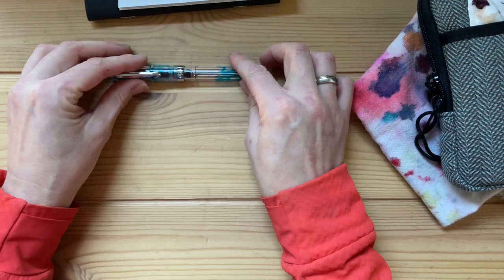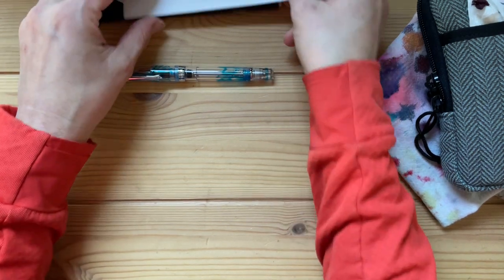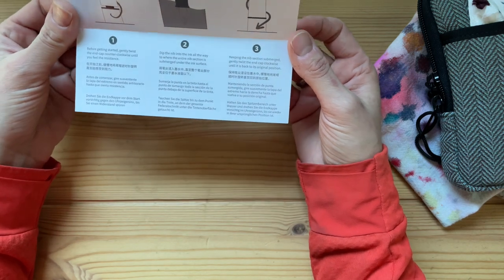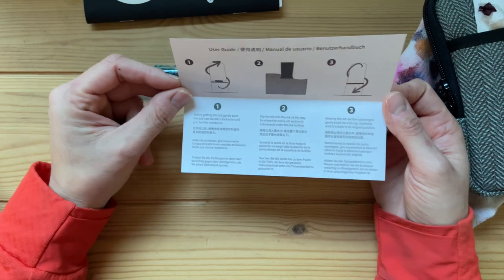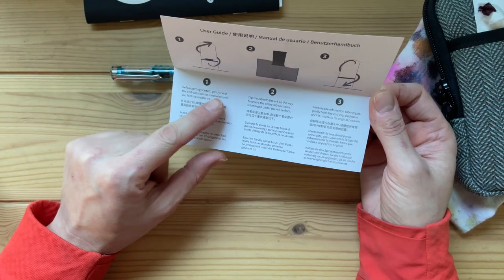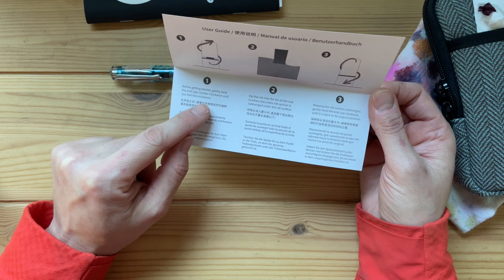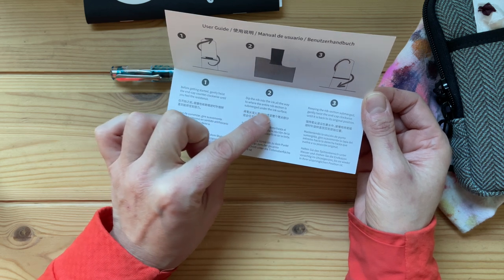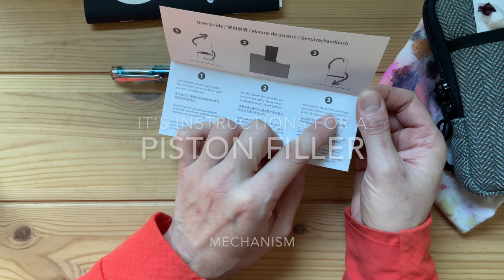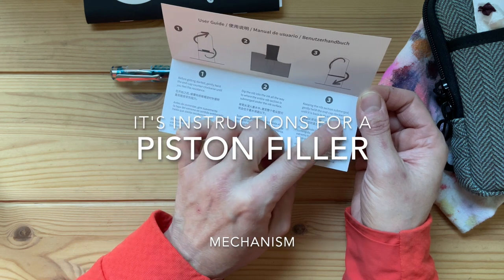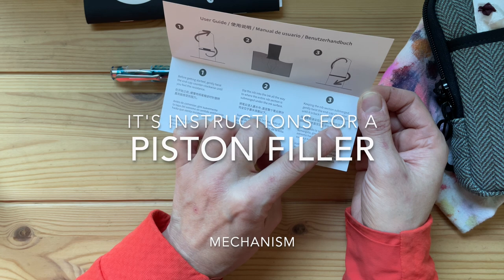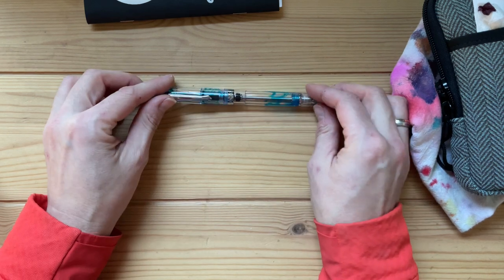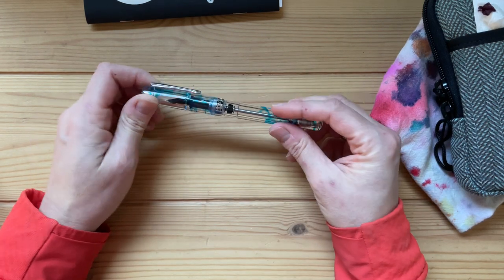What I noticed when I looked at this user guide, doesn't seem to be the guide for this pen. It says gently twist the end cap counterclockwise, dip the nib into the ink, then twist the end cap clockwise. This is absolutely not how you would fill a vacuum filler fountain pen.